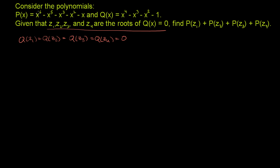The first thing to do is express the higher-degree terms in terms of Q(x). If I multiply Q(x) times x squared, the x to the fourth becomes x to the sixth, and the x to the third becomes x to the fifth. So x squared times Q(x) is going to be x to the sixth minus x to the fifth minus x to the fourth minus x squared — just multiplied all terms by x squared.